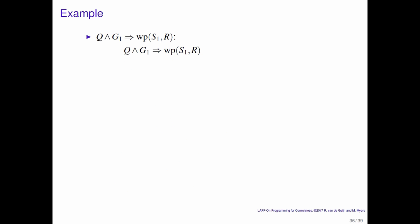So obviously proving that Q and G1 implies the weakest precondition S1, R follows very similarly. So what I'm going to do is I'm going to leave this as a homework and I will see you in the next video.